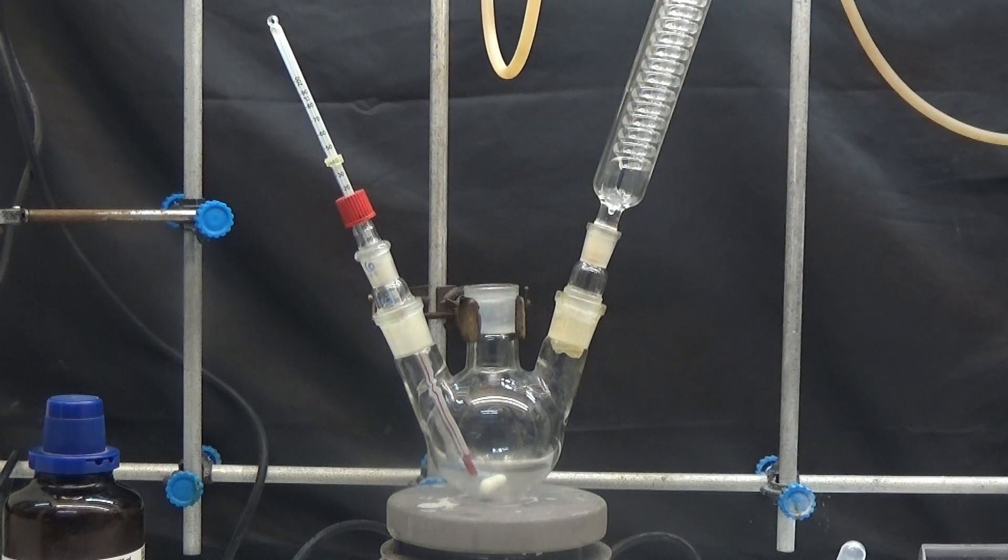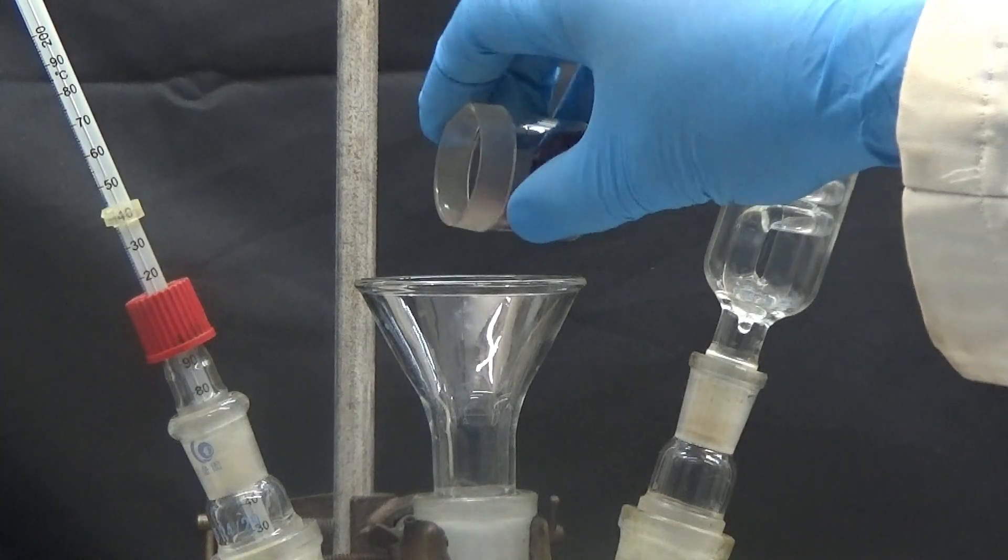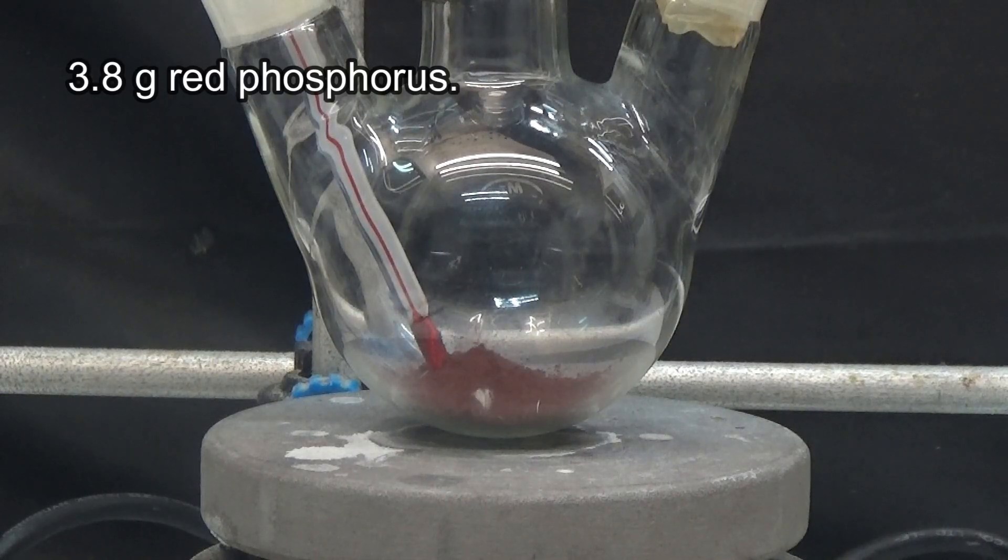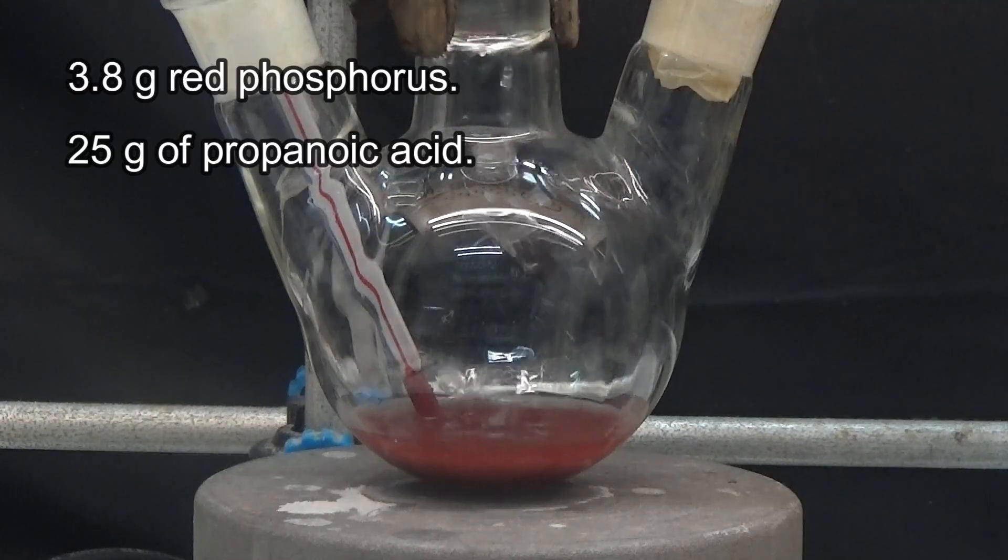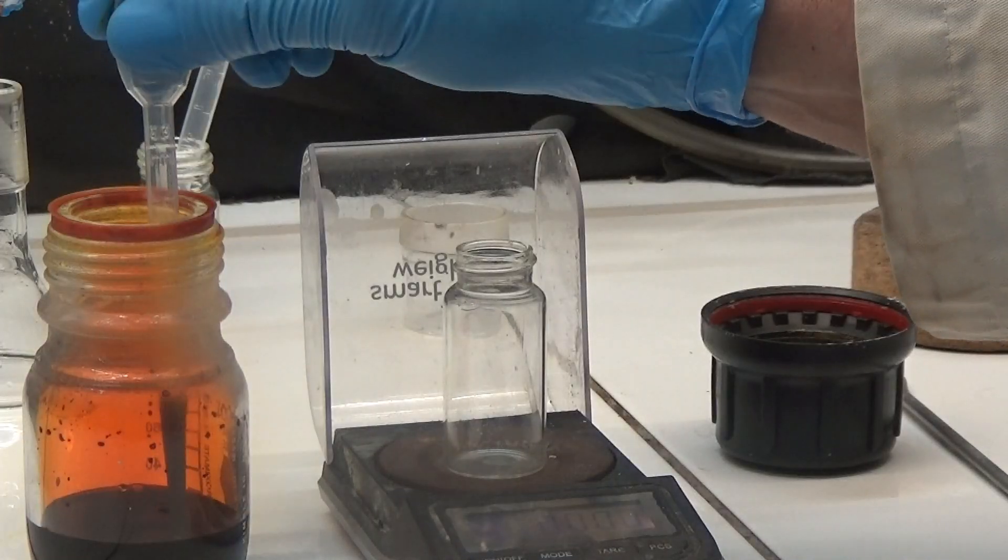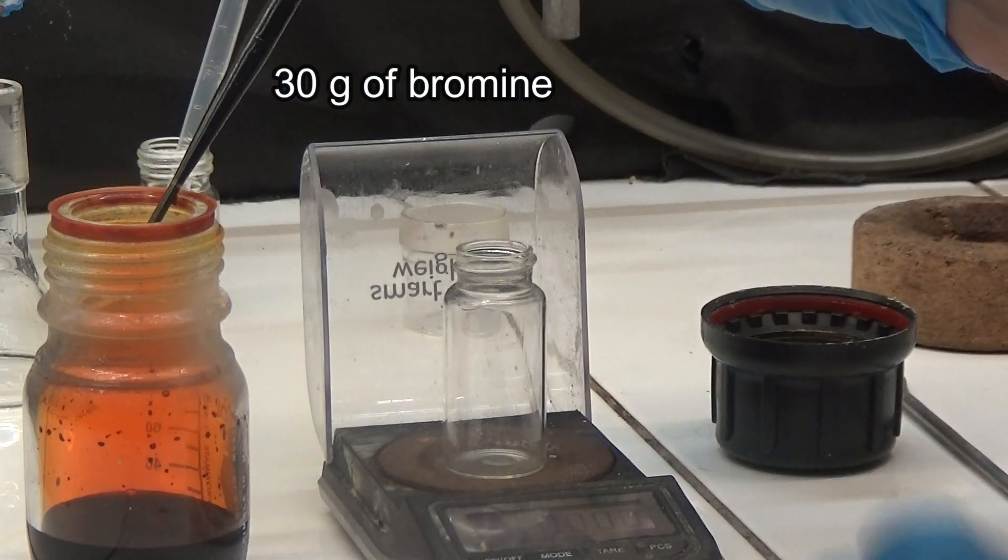A 250 ml flask was used with a thermometer, reflux condenser, and a pressure-equalizing funnel. In the flask, we put 3.8 grams red phosphorus, 25 grams of propanoic acid, and weigh 30 grams of bromine under a fume hood, taking care not to inhale and not to spill it.